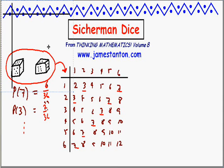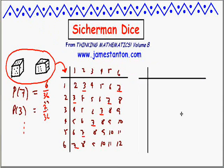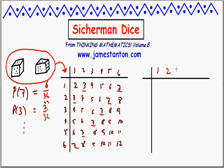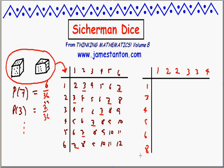He said: suppose you number the dice instead in the following manner. Give one die the numerals on its six faces: 1, 2, 2, 3, 3, and 4. And on the other die, give the numbers 1, 3, 4, 5, 6, and 8. Weird.